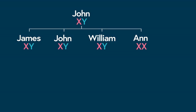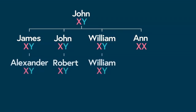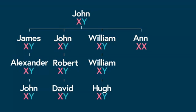Each of the three sons also have a son who inherits the Y chromosome from their father. These three grandsons of John Senior also each have a son. The Y chromosome has now been passed down three generations from John Senior to his great-grandsons.